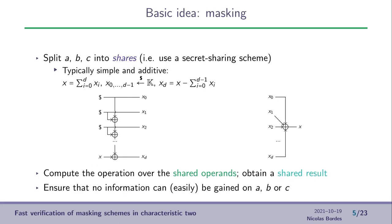To do so, one possible countermeasure is to use masking which is to split A, B and C into shares using a secret sharing scheme. For example, we can use an additive one. Here we have the original value x that will be split into d plus one shares, the xi, such that the first d shares are taken uniformly at random and the last one, xd, is computed such that the sum of all the shares is equal to x.